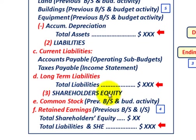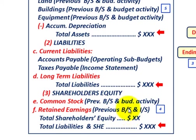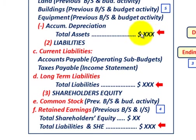Thirdly, shareholders' equity: common stock comes out of the previous balance sheet plus any budgeted activity for the period, and retained earnings comes from the previous balance sheet and the income statement for the period. We total up shareholders' equity, then add total liabilities plus shareholders' equity. This amount should balance with our total assets — total liabilities plus shareholders' equity must equal total assets.